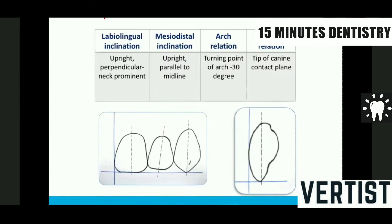There comes the Virat Kohli of our teeth arrangement — the maxillary canine — which plays a very crucial role, because this canine is going to decide the aesthetics, the balancing, and the position of the posterior teeth. Labiolingually it should be upright, mesiodistally it should be upright, and the arch rotation should be turned around 30 degrees to follow the arch form.